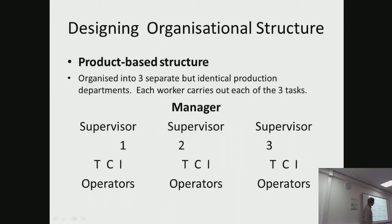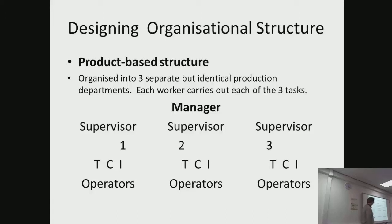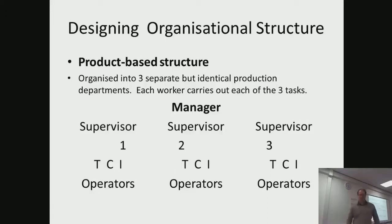In the product-based structure, you have one operator from T for tube, one operator from C for cap, and one operator from I for ink. They work together — under one supervisor they make one pen. Then supervisor number two makes their pen, supervisor number three makes their pen. Each worker carries out each of the three tasks, so that is quite interesting.